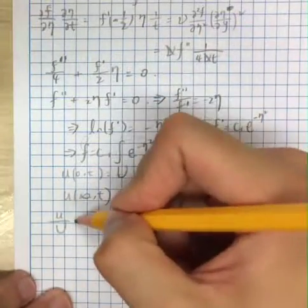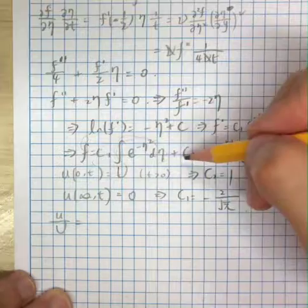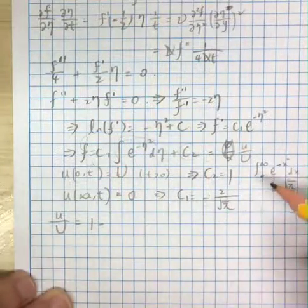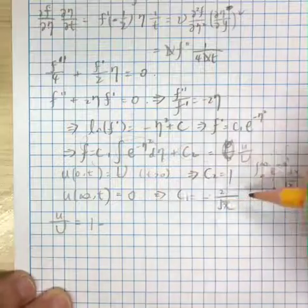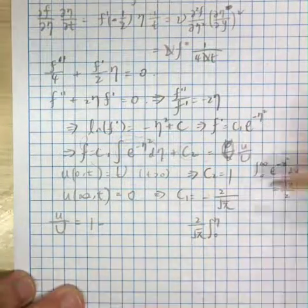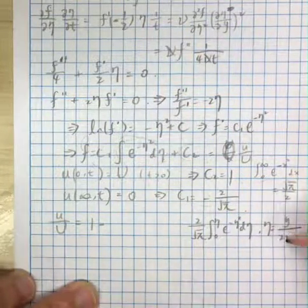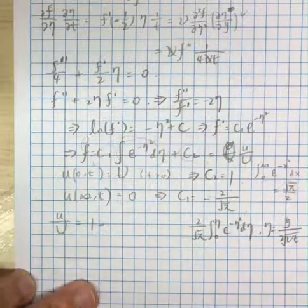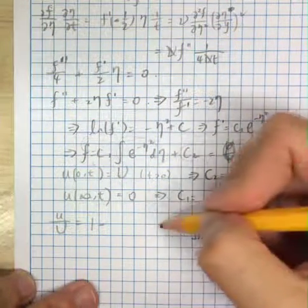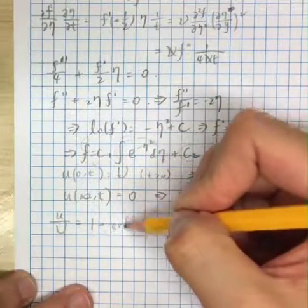Now we have our solution. u over capital U equals f(eta), which works out to one minus the quantity 2 over square root pi times the integral from zero to eta of e to the minus eta squared d eta. This function is what we call the error function, and our final result is u over capital U equals one minus the error function of eta.